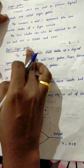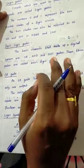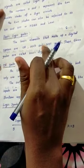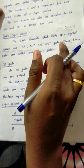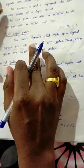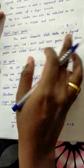What is basic logic gates? The basic elements that make a digital system are OR and AND and NOT gates. It is called basic logic gates.